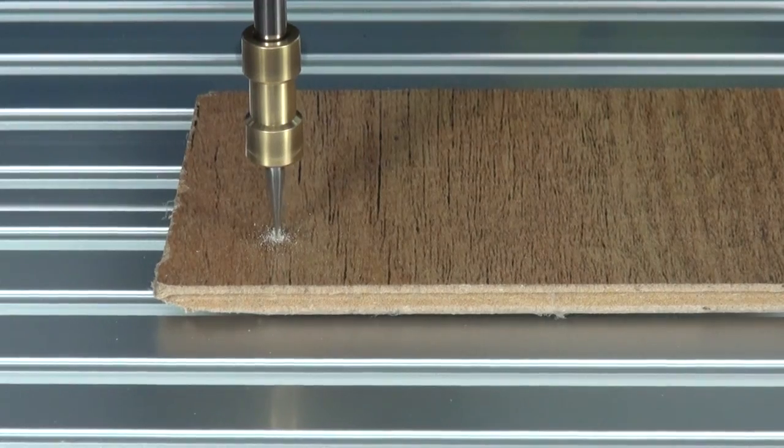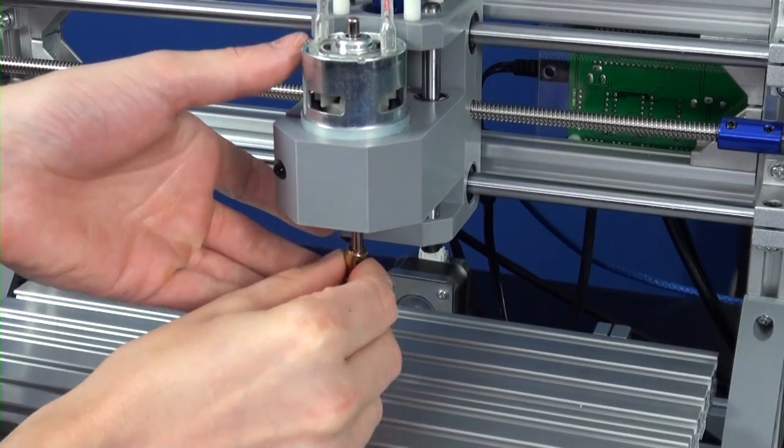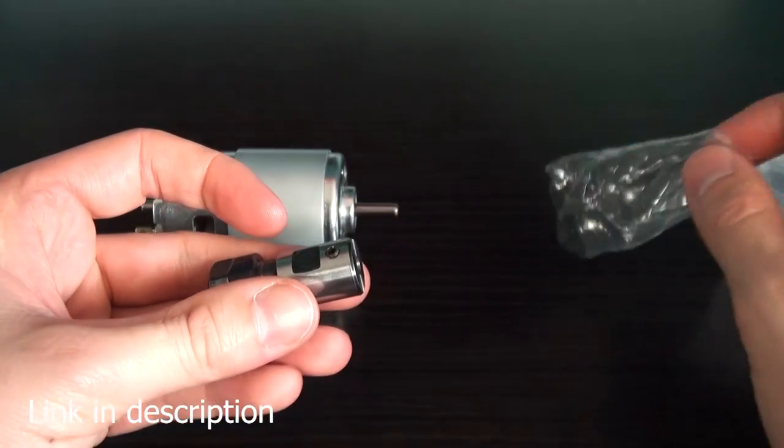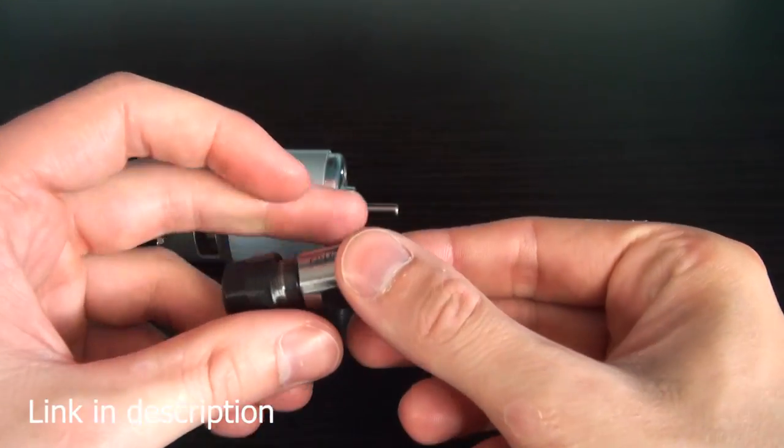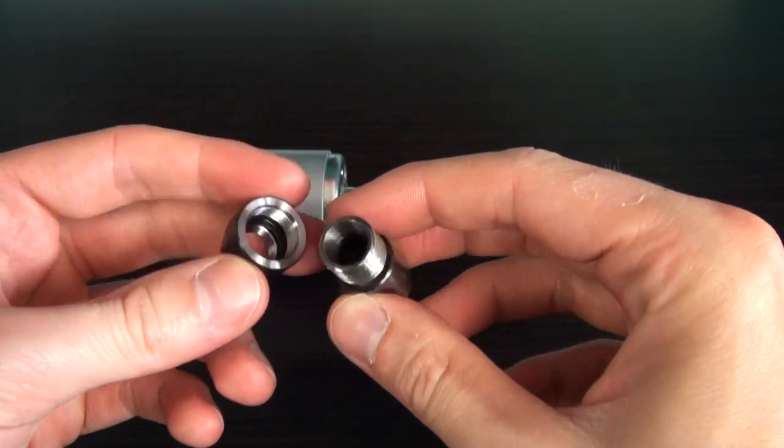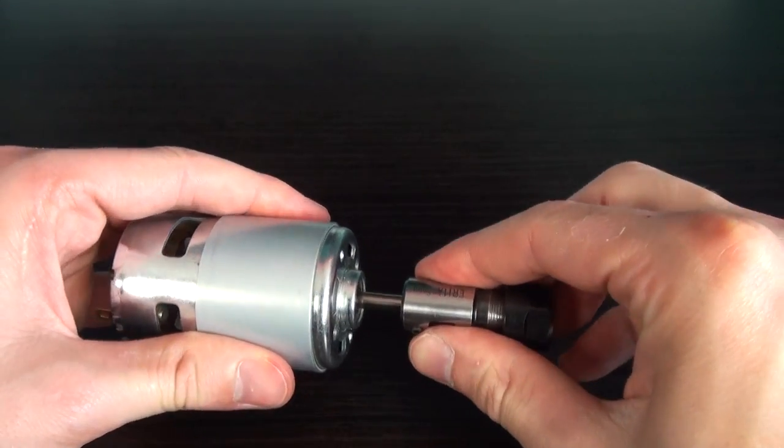Before we proceed with testing I'm going to replace this original brass coupler with this much more solid colored chuck. This chuck works with precision spring collets that come in metric and imperial sizes.